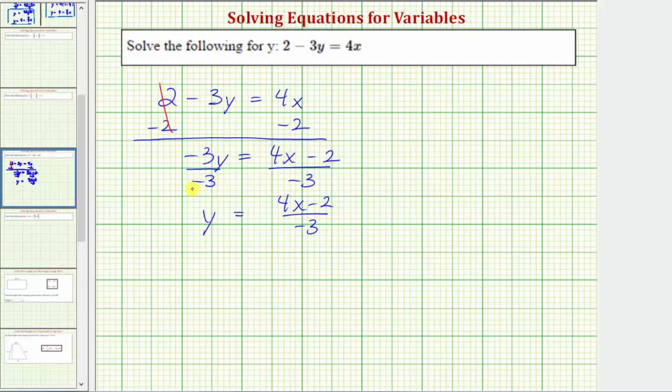This would be correct to express y in this form, but we can also express y in a couple other different forms. It's not common to have a negative value in the denominator, so one thing we could do is multiply the numerator and denominator of the fraction by negative 1 to make the denominator positive. If we did that, we would have y equals negative 1 times the quantity 4x minus 2 divided by negative 1 times negative 3.